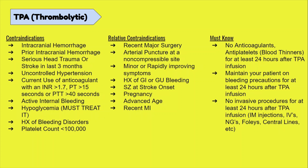Must-know things include: no anticoagulants or antiplatelets for the first 24 hours after TPA infusion. Make sure to keep your patient on bleeding precautions. You're going to have patients who completely recover after TPA and want to walk around, but you need to keep a close eye on them because if they fall and hit their head, a head bleed could easily occur. Also, no invasive procedures for at least 24 hours after giving TPA — and that can include IM injections, NGs, Foleys, central lines, etc.